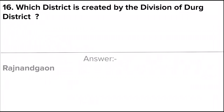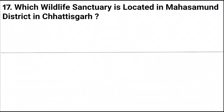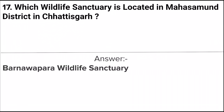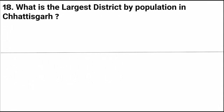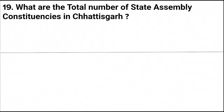Next question: Which district was created by the division of Durg district? Answer: Rajnandgaon. Next question: Which wildlife sanctuary is located in Mahasamund district in Chhattisgarh? Answer: Barnawapara Wildlife Sanctuary. Next question: What is the largest district by population in Chhattisgarh? Answer: Raipur.